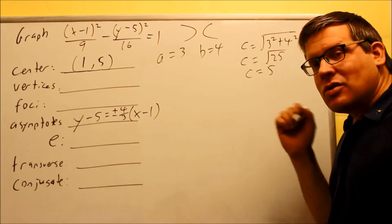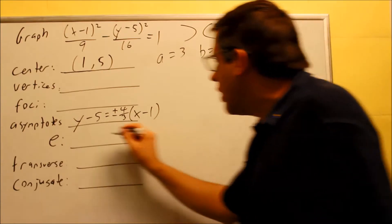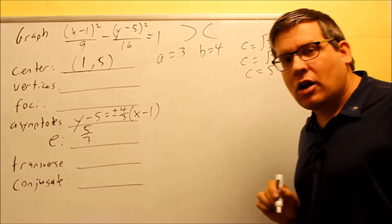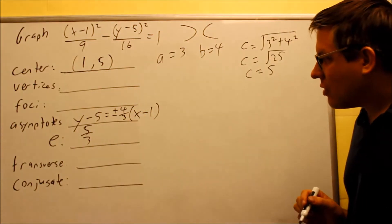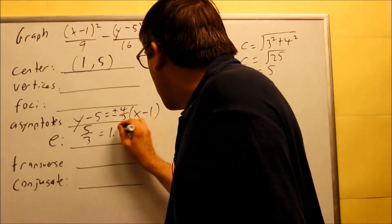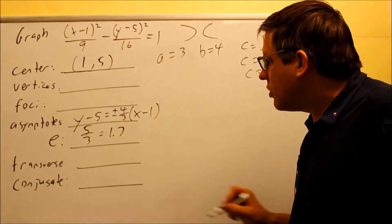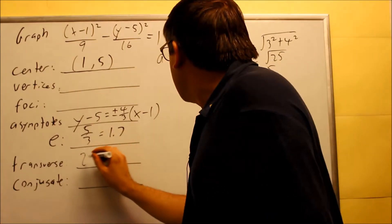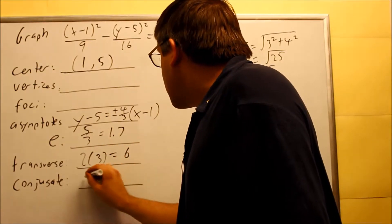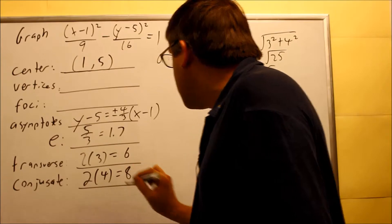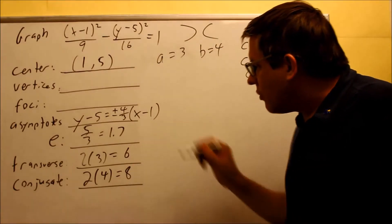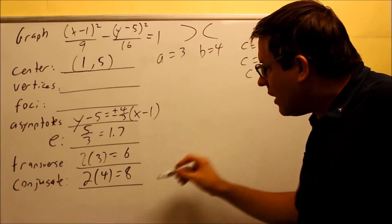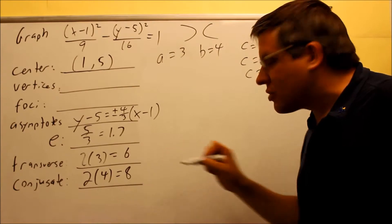Eccentricity e equals c over a. In this case we get an actual fraction — 5 thirds, which is approximately 1.7. The transverse axis is 2 times a, so 2 times 3 equals 6. The conjugate axis is 2 times b, so 2 times 4 equals 8. Notice that b is larger than a here, which is why the conjugate axis is the larger one.